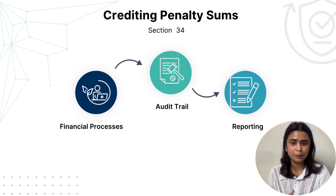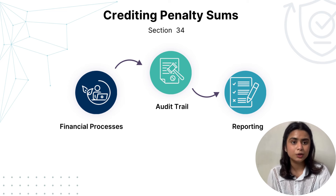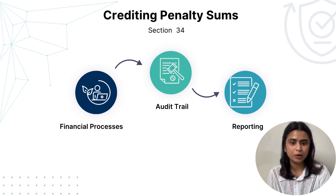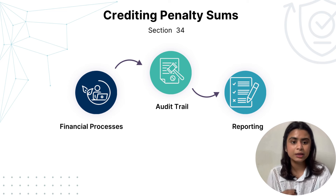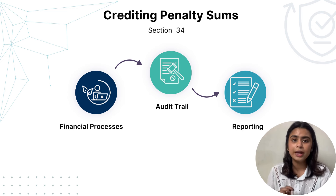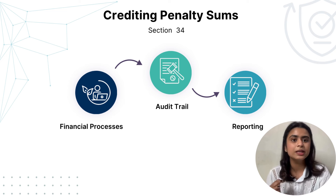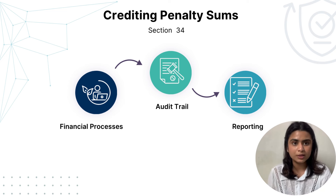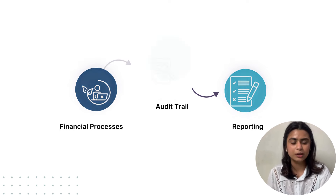Third, reporting. We need to implement robust reporting mechanisms to track penalty payments effectively and facilitate audits. TCS has implemented an integrated reporting system that ensures accurate tracking of all financial transactions, including penalty payments, aiding internal and external audits. This helps ensure tracking of payments efficiently within the organization.